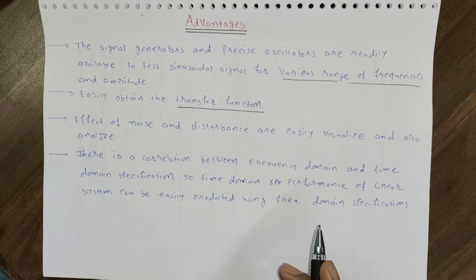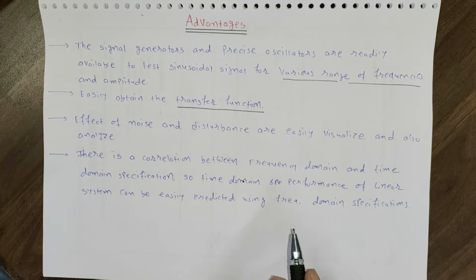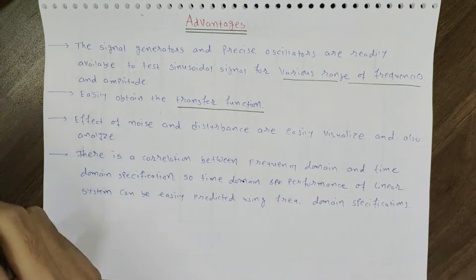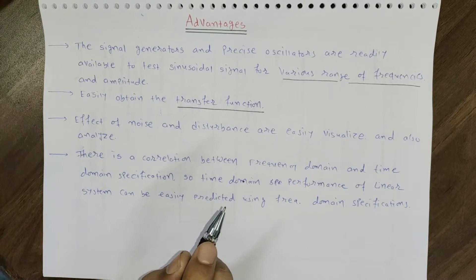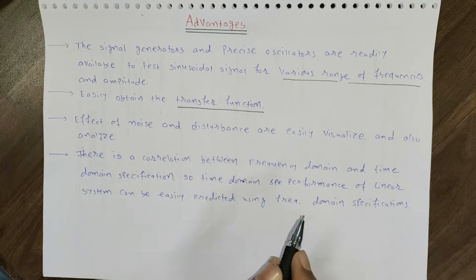Given a certain performance specification in time domain, I can translate it into frequency domain. If I give certain signals of varying frequency, based on those frequency responses I can easily estimate what is the transfer function of the system.